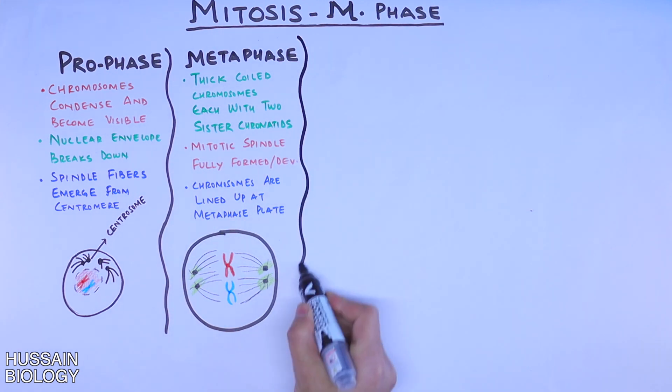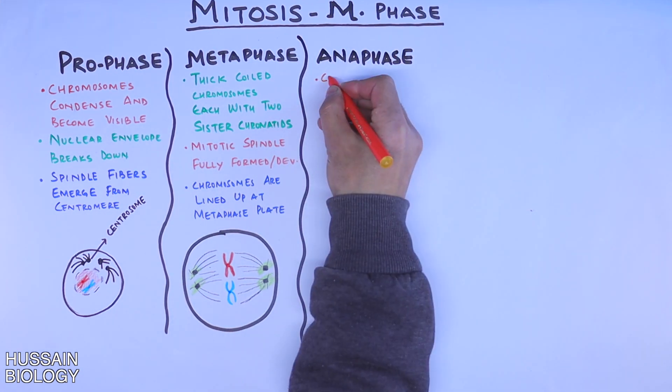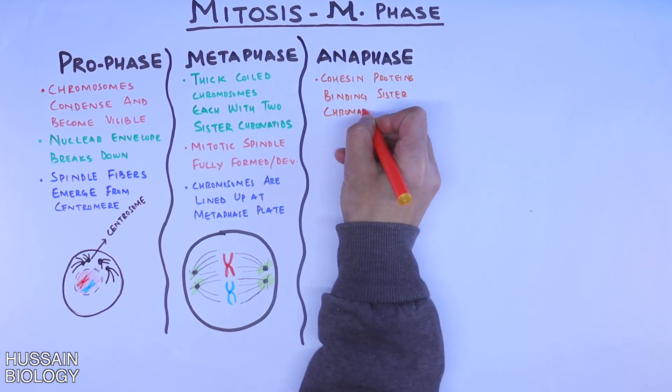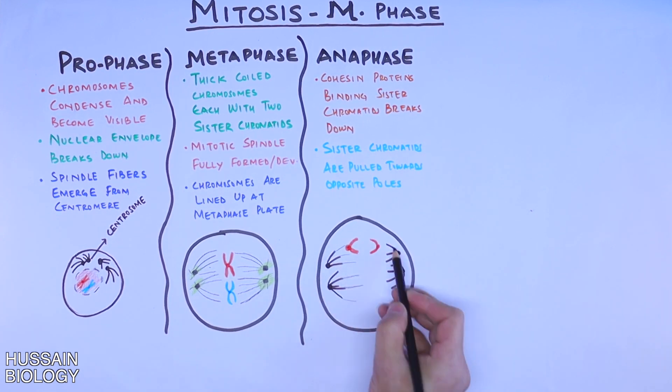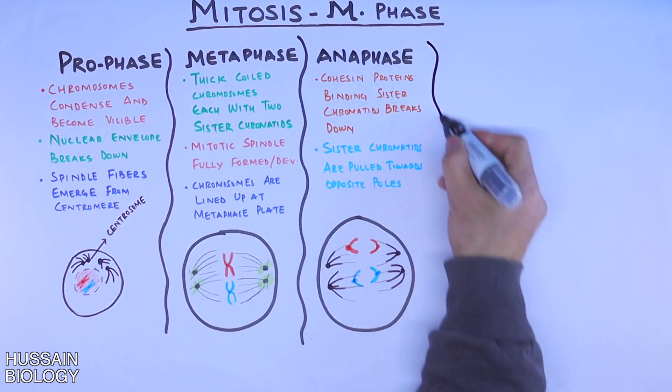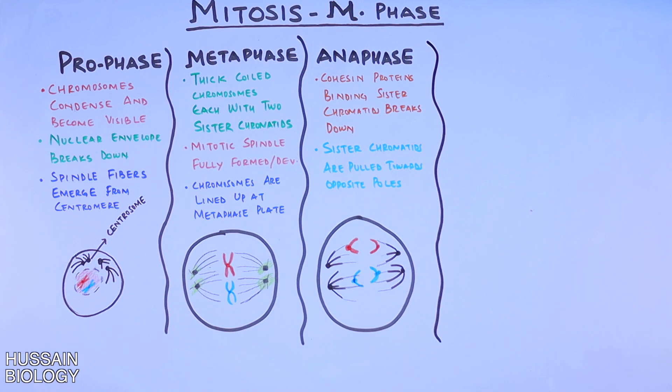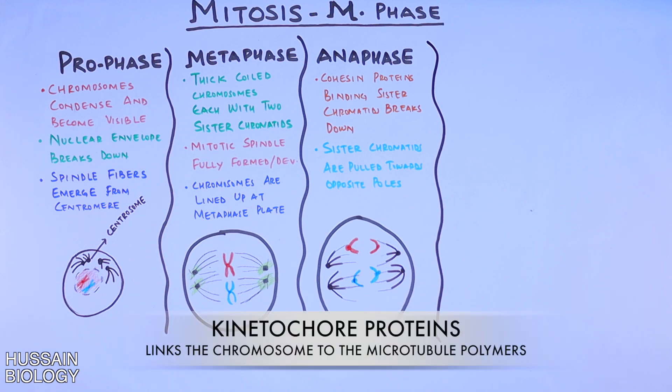Then we have the third phase of mitosis, which is anaphase, where first of all, cohesin proteins that bind sister chromatids break down, with which sister chromatids are pulled towards opposite poles as shown in the diagram. Here we can see the sister chromatids have separated and are going in opposite directions towards the poles. And do remember, attachment of microtubules to the chromosomes is mediated by kinetochore proteins.